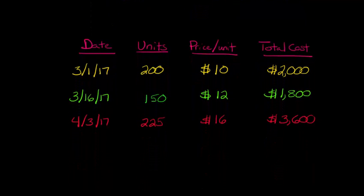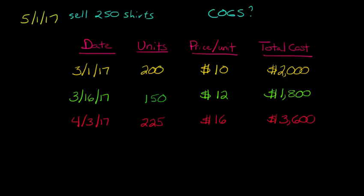Let's say that when we sell those 250 t-shirts, we sell them on May 1st. And now what do we need to know? We need to know COGS, cost of goods sold, and we need to know ending inventory. So here are the purchases. We take a look at the books and see what's our purchase history with these t-shirts?